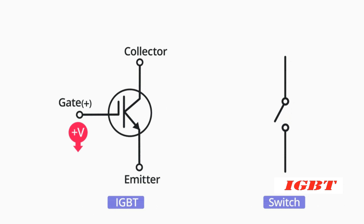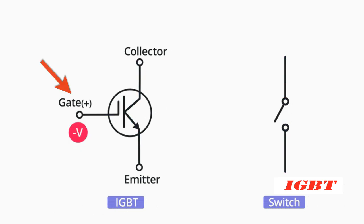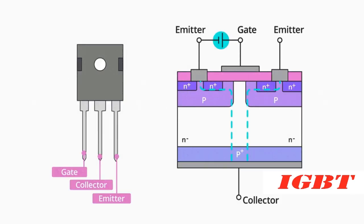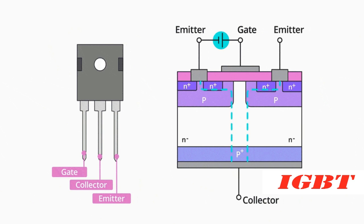The IGBT can also be considered a voltage-controlled device, as its output current is also a function of a small voltage applied to its gate. It differs functionally, however, in that this control signal voltage modulates a channel resistance, which in turn also varies the number of current carriers — both electrons and holes — available to carry current from the emitter terminal to the collector terminal.